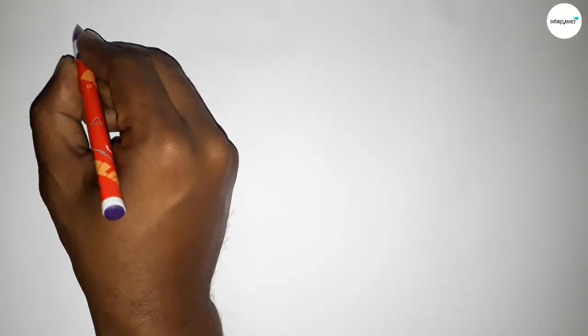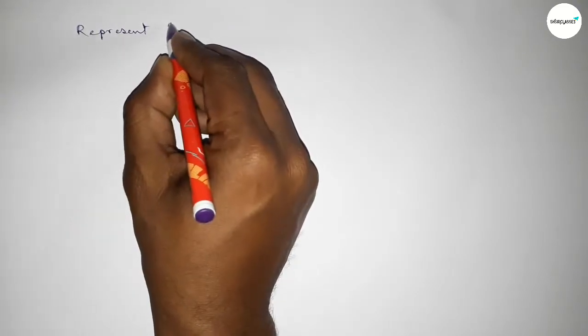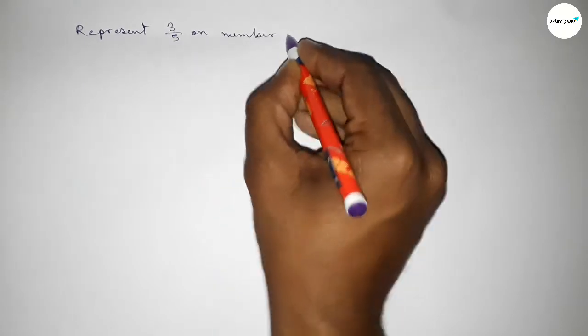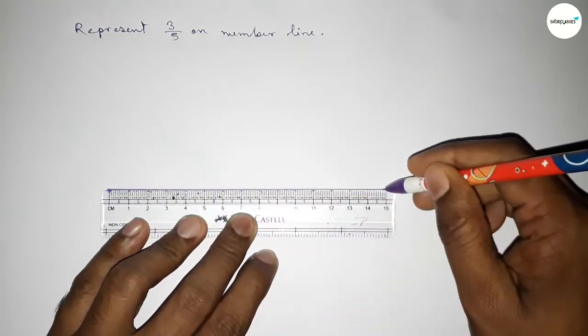Hi everyone, welcome to SSR Classes. Today in this video we have to represent 3 over 5 on number line. So let's start the video. First of all, we have to draw here the number line.